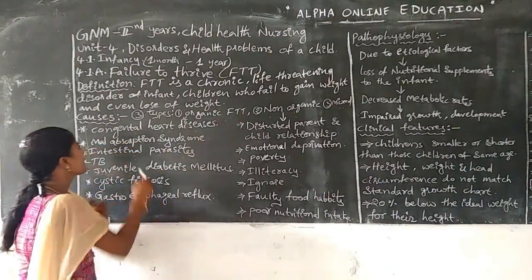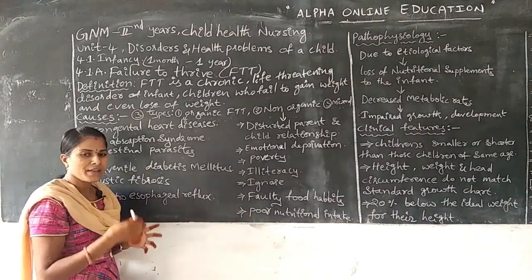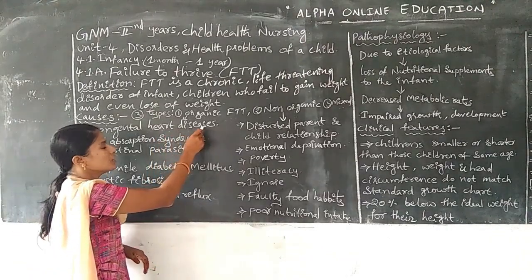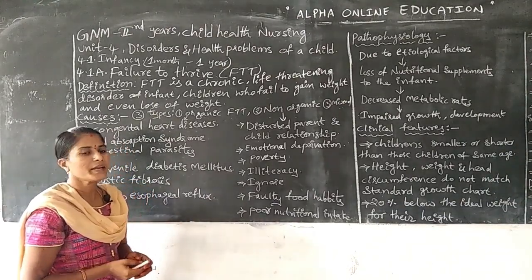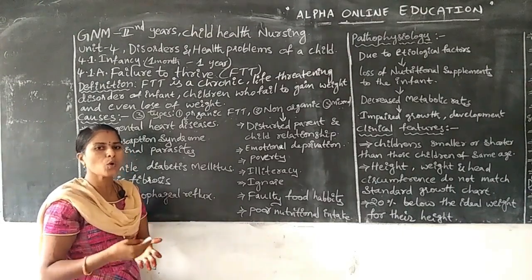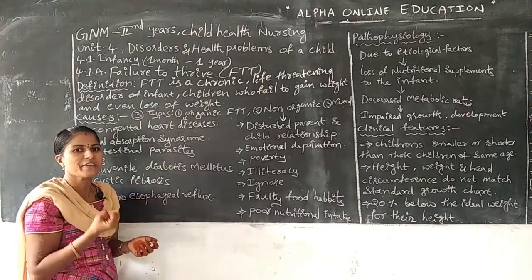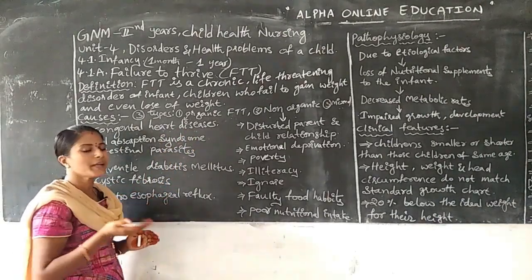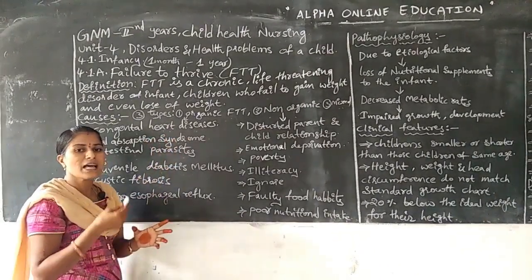In this first, we are going to discuss about congenital heart diseases. Congenital heart diseases means it is one disease condition where structural abnormalities are present in the heart. Due to that, the heart is not pumping sufficient blood all over the body. In the blood, oxygen and glucose are present. When the patient is not receiving sufficient blood, sufficient oxygen and glucose are not delivered to all body parts, so the growth and development should be decreased.